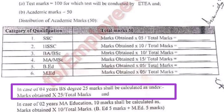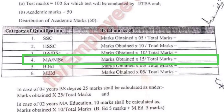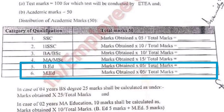اگر بندے نے B.S کیا ہوا ہے تو let's suppose 3300 marks ہیں تو 3300 کو 25 سے multiply کیا جائے گا اور total marks جو کہ let's suppose 4800 ہیں اس پر divide کیا جائے گا۔ M.A/M.Sc کے لیے اگر two year program ہے تو total marks کو 15 سے multiply کیا جائے گا اور total پر divide کر دیا جائے گا۔ B.Ed اور M.Ed کو الگ الگ count کیا گیا ہے - B.Ed کے الگ 5 marks اور M.Ed کے بھی الگ 5 marks ہیں، وہی marks obtained multiply divide by total فارمولہ استعمال ہوگا۔